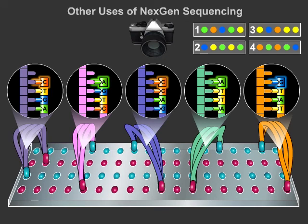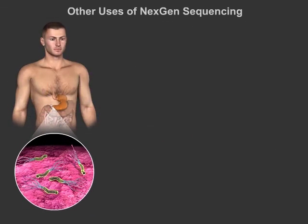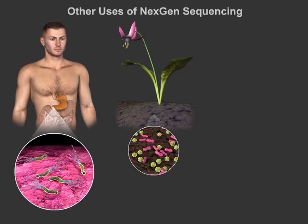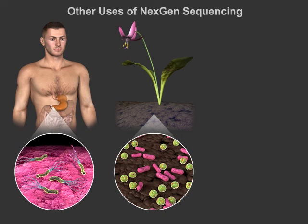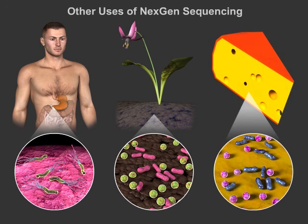Next-gen sequencing can also be used to understand other microbial communities. For instance, Next-gen can be used to study the human gut microbiome to understand human diseases, diverse soil microbiomes to improve agricultural efficiency, and the cheese microbiome to improve dairy production.